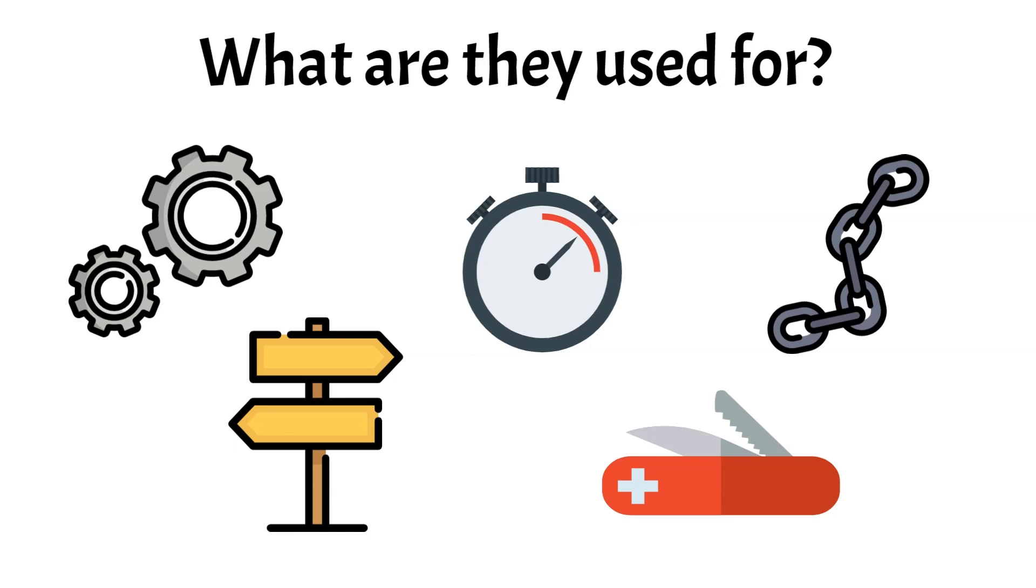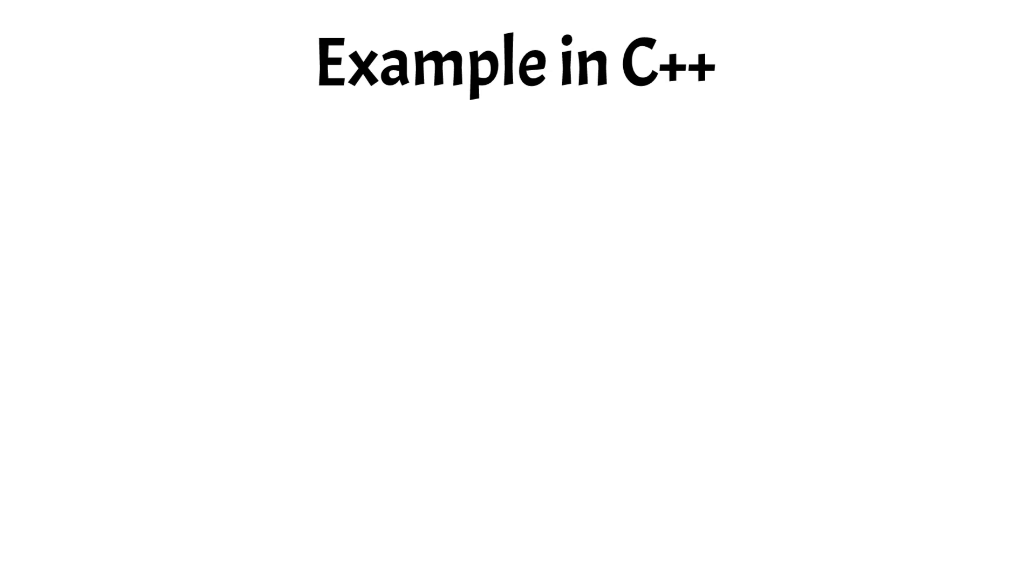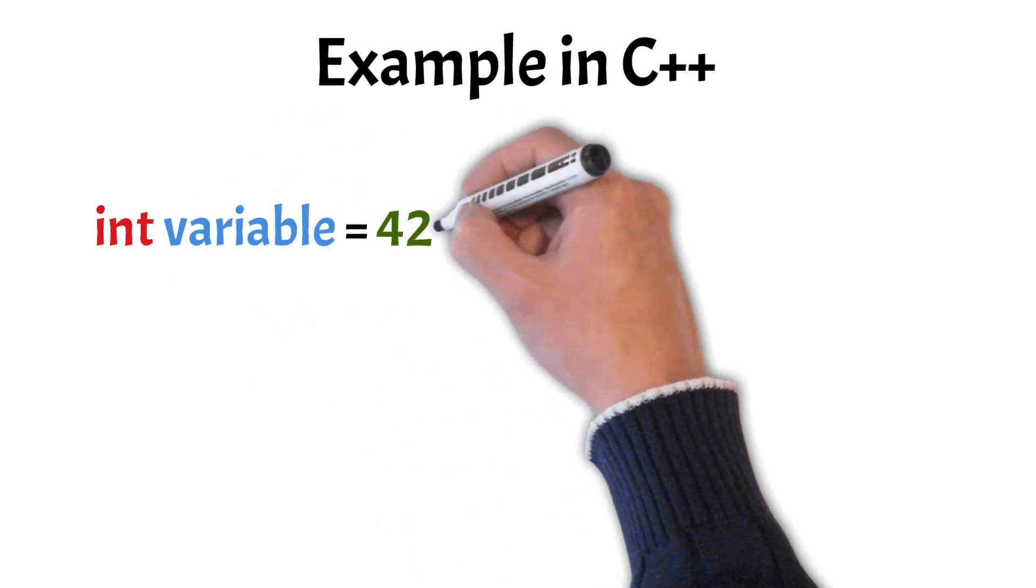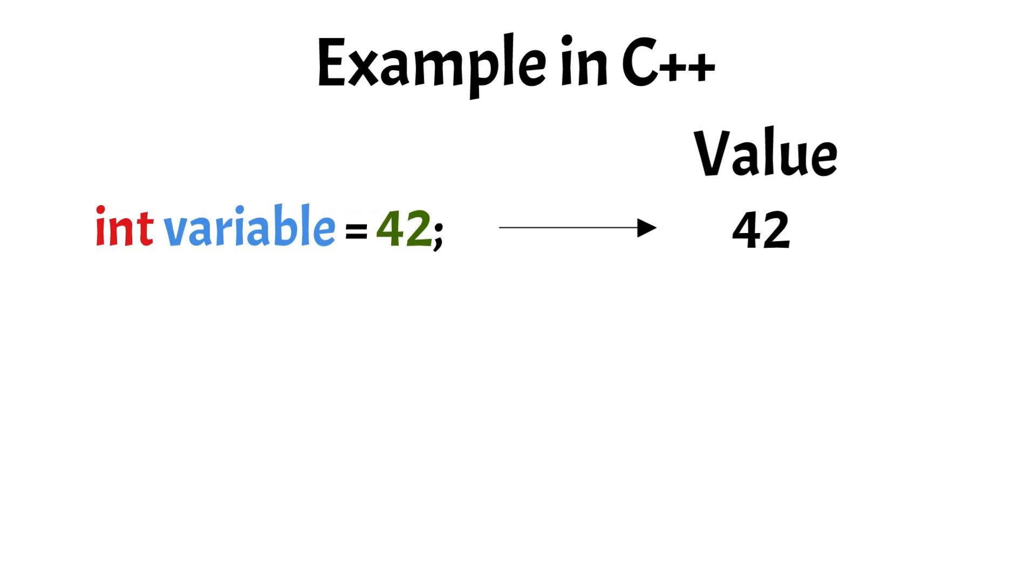Now let's examine pointer syntax in an actual programming language. We'll use C++ for this example. Imagine that you have a variable of type integer that holds the value 42. Initializing such a variable involves defining the appropriate data type, variable name, and value.